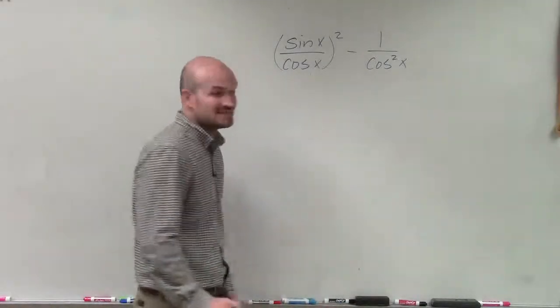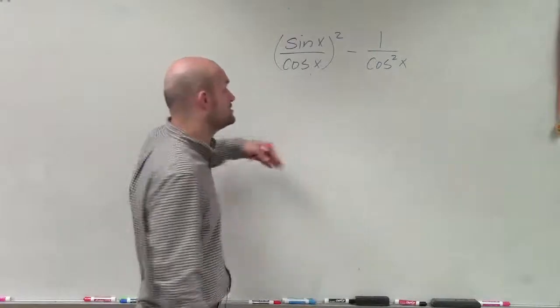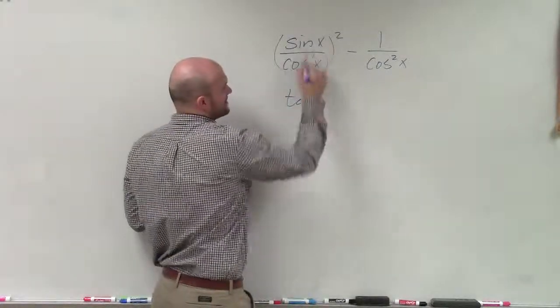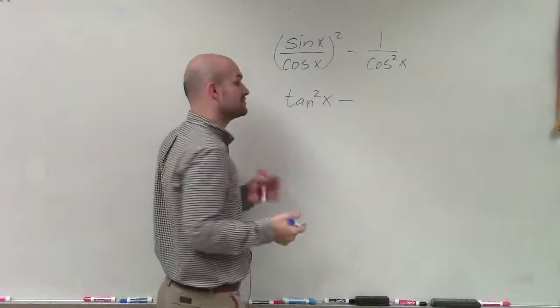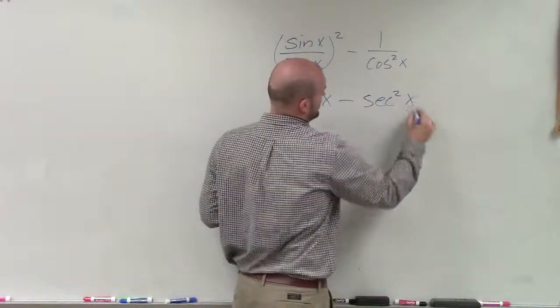And what we're going to want to do in this case is simplify these as best as possible. Well, we know when we have sine of x divided by cosine of x, I can rewrite that as tangent. And since that's being squared, this can be tangent squared of x minus 1 over cosine squared of x. By using the reciprocal identities, that's going to be secant squared of x.